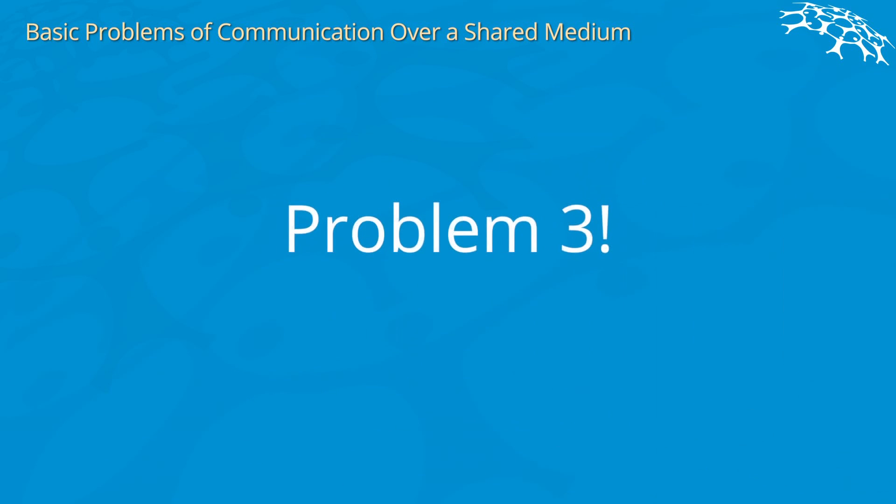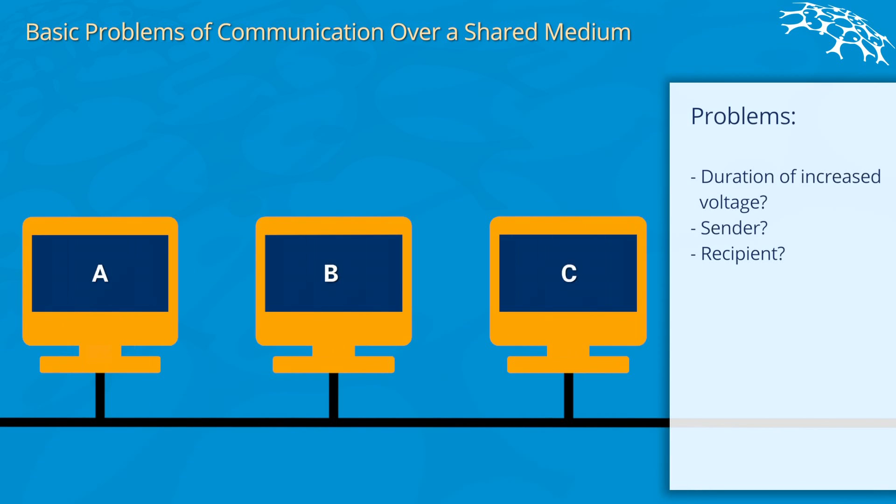A similar problem that occurs is, who is the recipient of the data? So if A transfers data, B and C might not know if this data is actually for them.